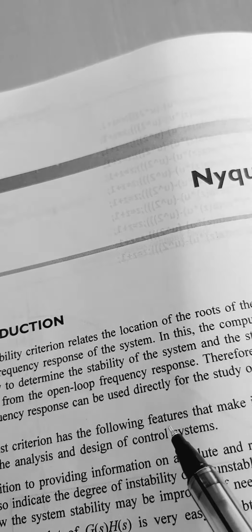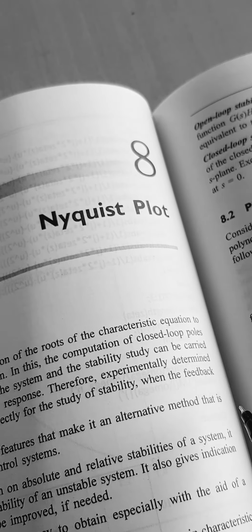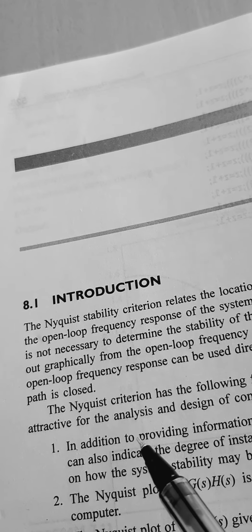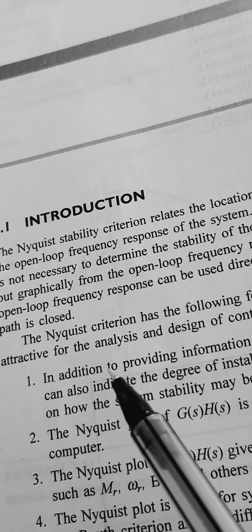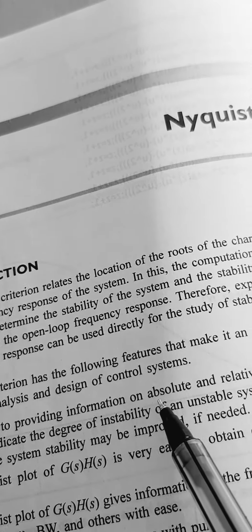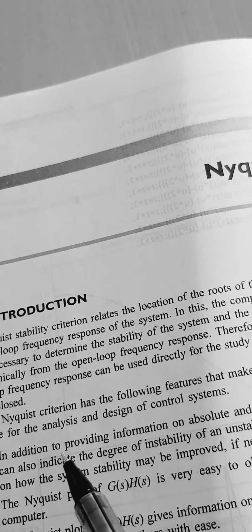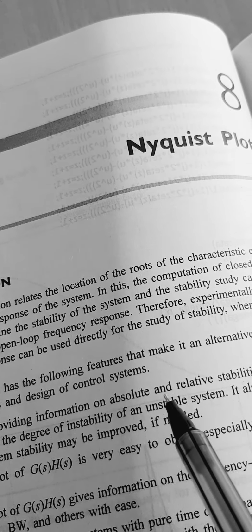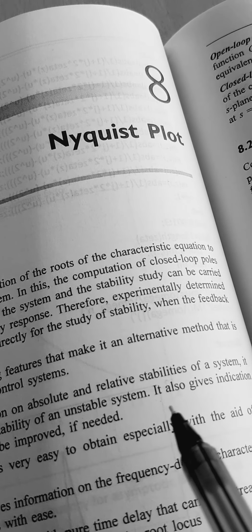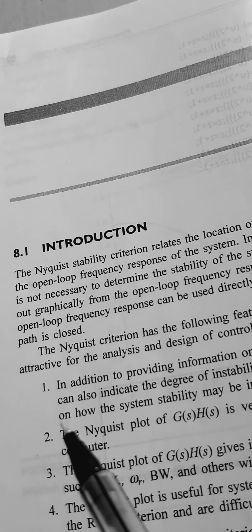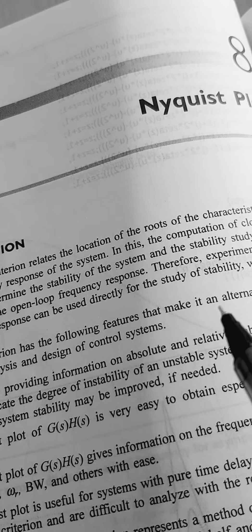The Nyquist criteria has the following features that make it an attractive alternative method for the analysis and design of control systems. In addition to providing information on absolute and relative stabilities of the system, it can also indicate the degree of instability of an unstable system, and it gives indications on how the system stability may be improved.